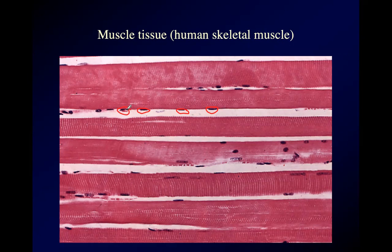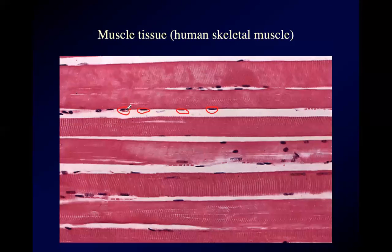Muscle can only contract by itself — a muscle can't stretch. The way you stretch a muscle is by contracting a muscle in the opposite direction. If you flex your elbow, you're contracting your biceps and stretching out your triceps. If you extend your elbow so that your arm is completely straight, you're stretching your biceps and flexing your triceps. Muscles have to work in opposing pairs because by itself a muscle can't make itself any longer — a muscle can only get longer if another muscle pulls on it.